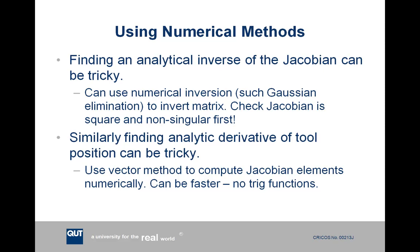If you're trying to find the derivative of the tool point position, if you've got a complex geometry of your arm, this can be quite complicated. So you might use something like vector methods to compute the Jacobian elements numerically, so you avoid explicitly using signs and cosines and so forth.